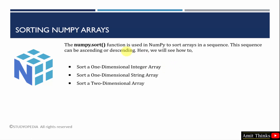To understand the sort function, we will see three examples. First, we will sort a 1D integer array, then we will sort a 1D string array, and then we will also see how to sort a two-dimensional array. Let's begin.